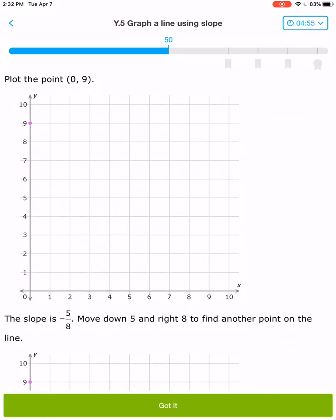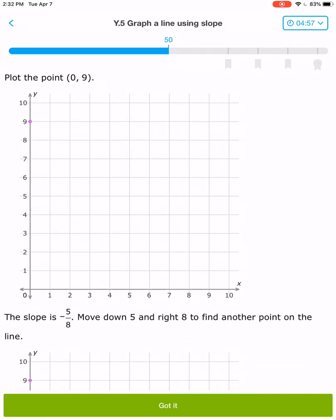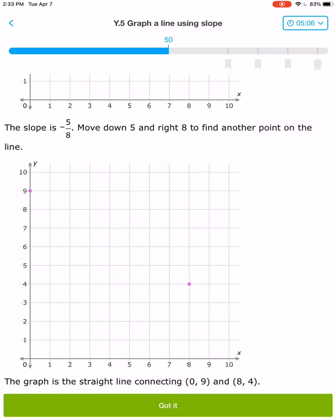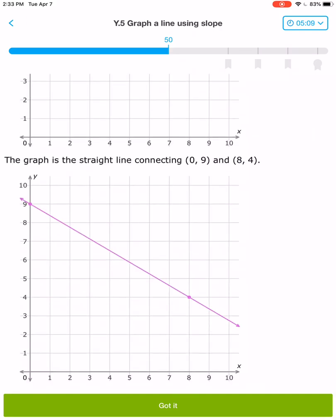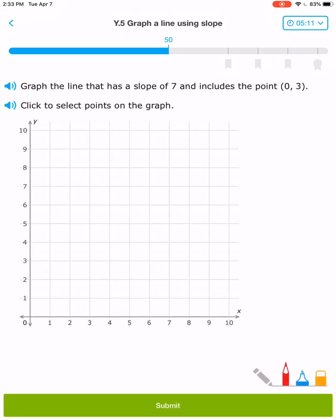It says plot the point (0, 9). And whoops! I plotted it on the x-axis when it should have been on the y-axis. You're probably going to make the same mistake I did. Well, I'm going to learn from that mistake and not do it again. Let's say I got it and let's continue forward.